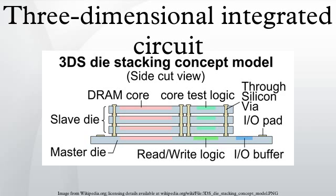In microelectronics, a three-dimensional integrated circuit (3D IC) is an integrated circuit manufactured by stacking silicon wafers and/or dies and interconnecting them vertically using through silicon vias so that they behave as a single device to achieve performance improvements at reduced power and smaller footprint than conventional two-dimensional processes.